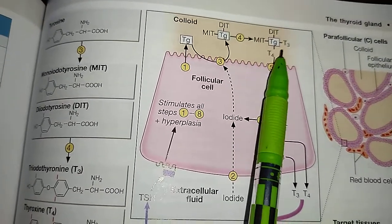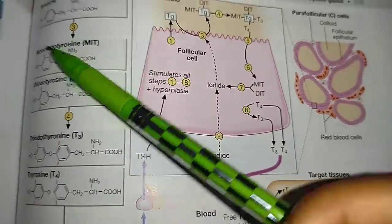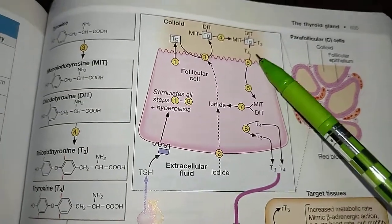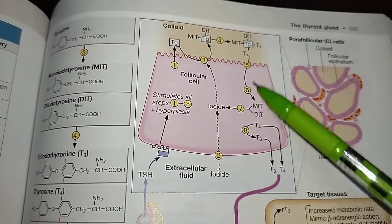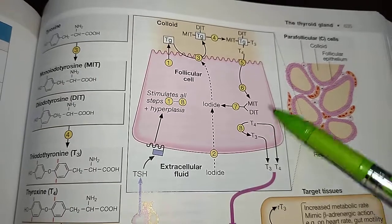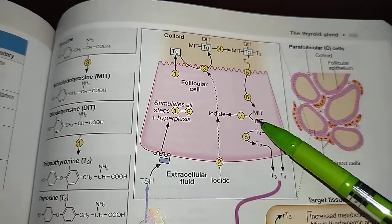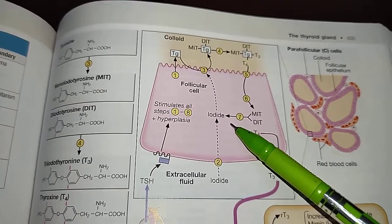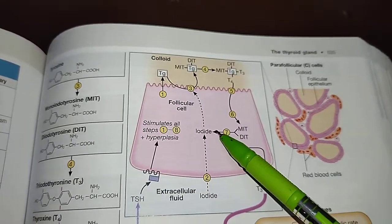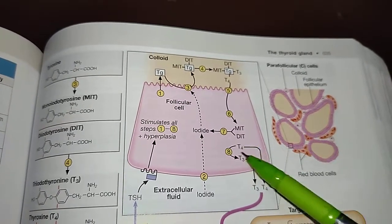After the fourth step, the thyroglobulin molecule along with T3, T4, MIT, and DIT are transported back inside the follicular cell. The mono-iodotyrosine and diiodotyrosine then undergo dehalogenation, converting them back into free iodine, which is recycled.